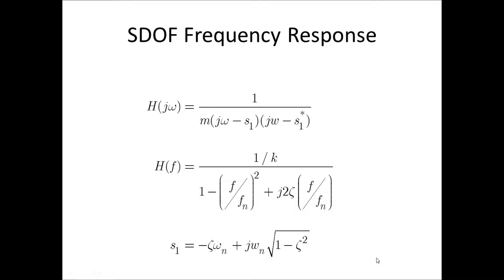which can be seen at the bottom of this slide, where s1 is minus zeta omega n plus j omega n times square root of 1 minus zeta squared. But we can also write h of f, the frequency response, as a function of frequency in hertz.